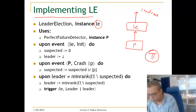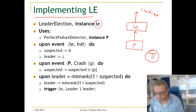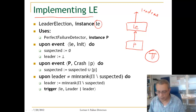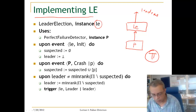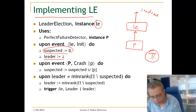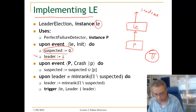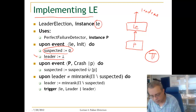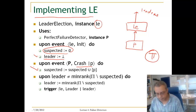When we start the leader election, we have a local set of suspected nodes, and initially we don't know the leader — it is undefined. Whenever a process crashes, we add it to the suspected set.